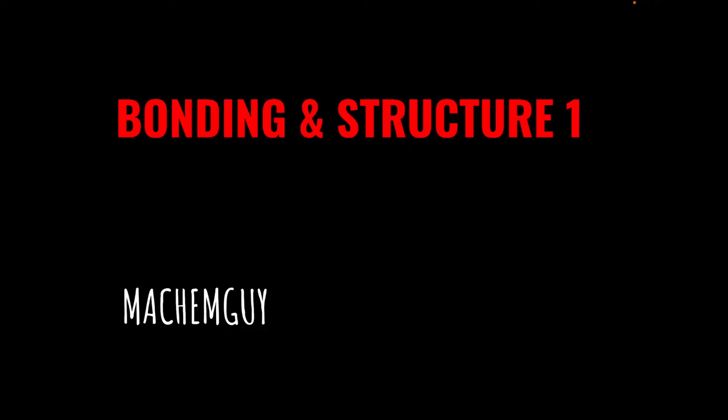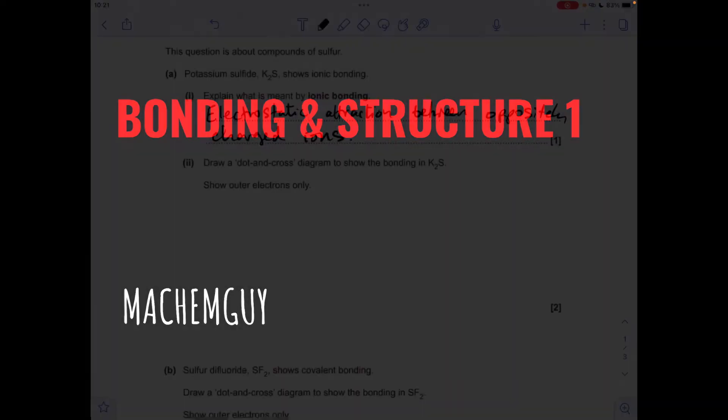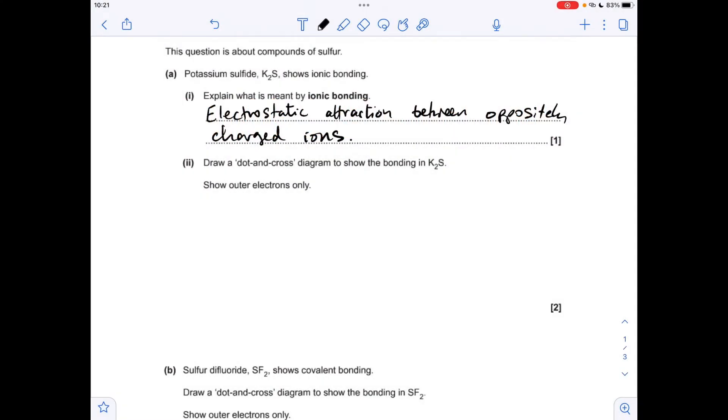As always, the link to the questions is in the description of the video if you want to try them first. The definition for ionic bonding is the electrostatic attraction between oppositely charged ions.